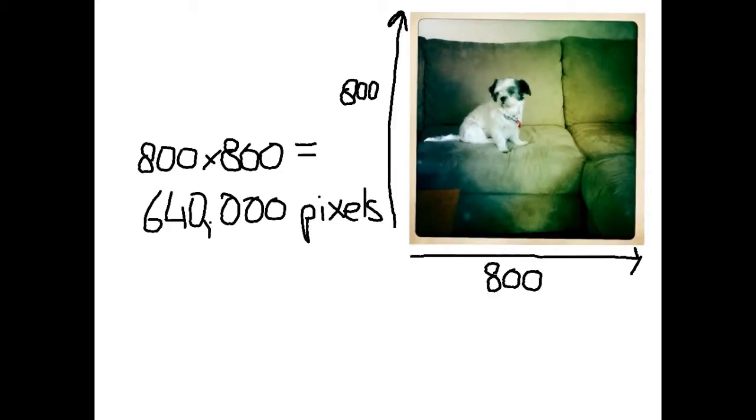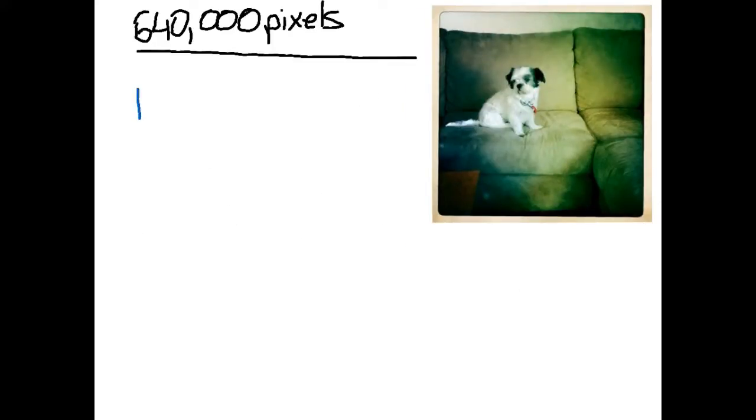We then need to look at how many bits of information are required for each individual pixel, and it depends on what information we're told as to how we're going to figure this out. So let's look at the different representations. If we were told that it used 16 colors, we're either told how many bit information it is or how many colors. If we are told colors, we need to figure out how many bits are required to produce that many colors.